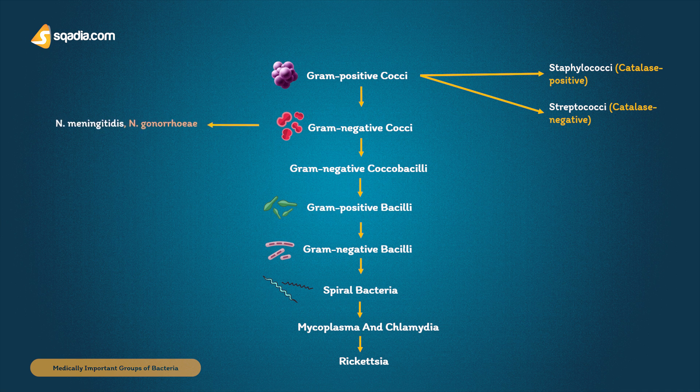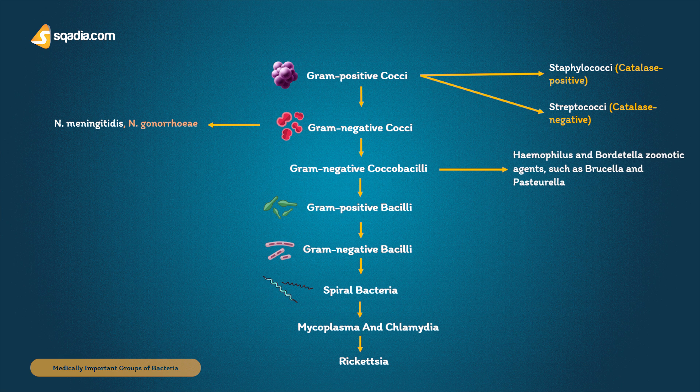Gram negative cocci include pathogenic Neisseria meningitidis, an important cause of meningitis and septicemia, and Neisseria gonorrhoeae, the agent of urethritis or gonorrhea.